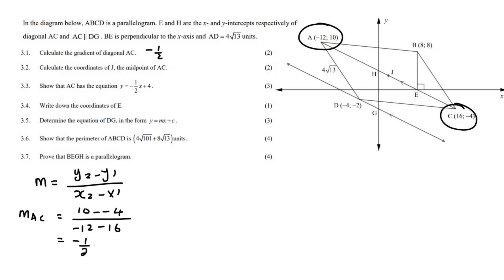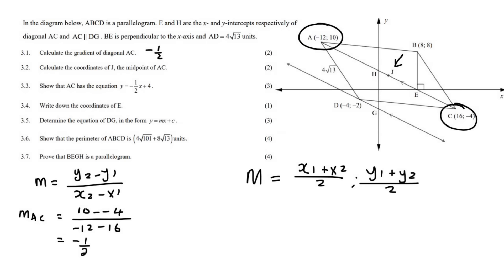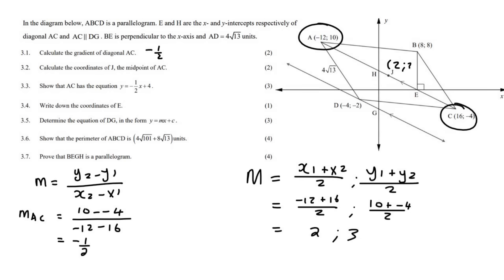Question 3.2: Calculate the coordinates of J, which is the midpoint. The midpoint formula is x1 plus x2 over 2, and y1 plus y2 over 2. That gives us minus 12 plus 16 over 2 and 10 plus minus 4 over 2, which gives us 2 for x and 3 for y. So the coordinates are (2, 3).